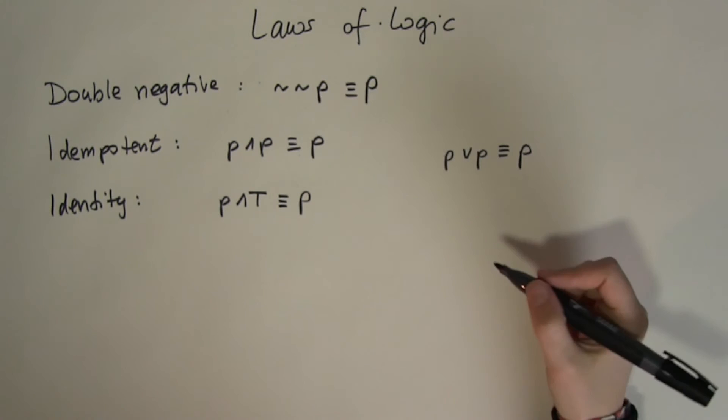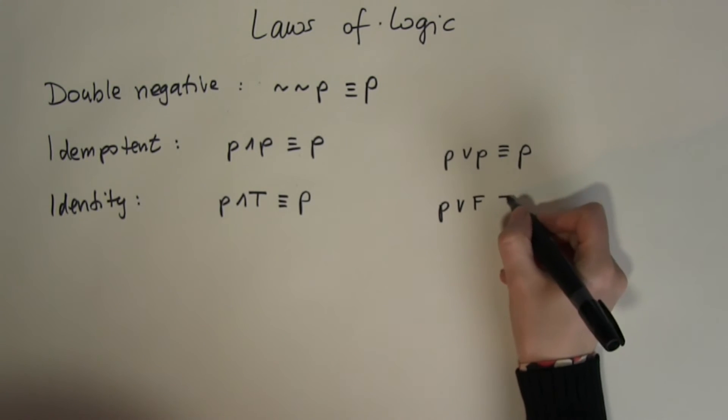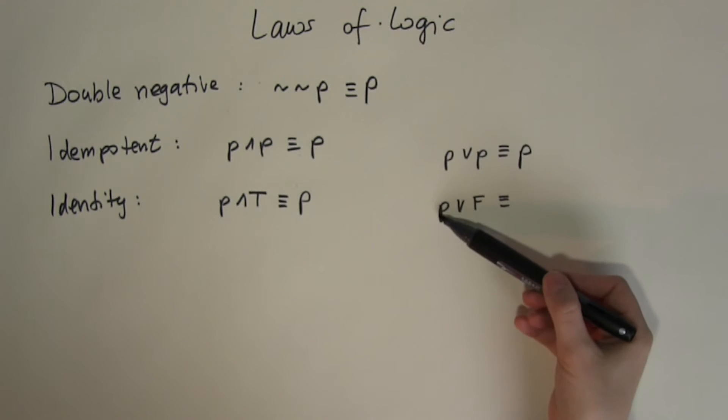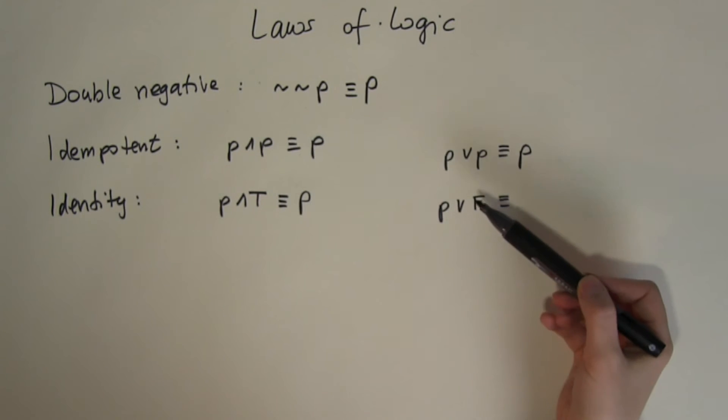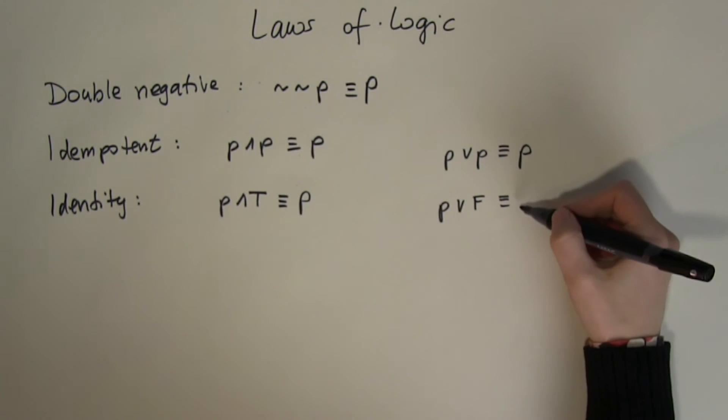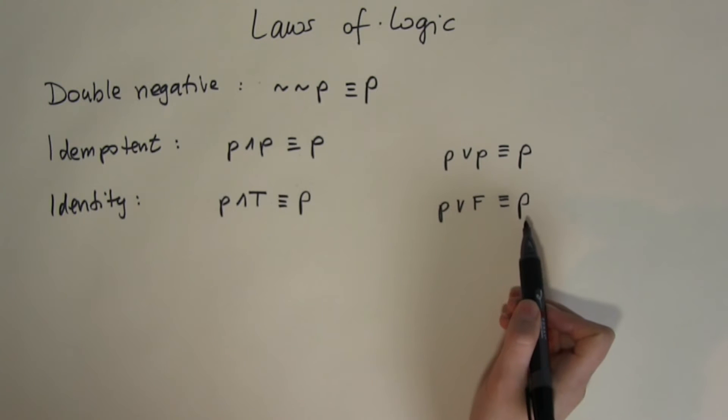What happens now if I use P or the false symbol? If P was true, true or false gives me true. But if P was false, false or false again gives me false. So again I'm going to end up with what P was. So P or false is logically equivalent to P.